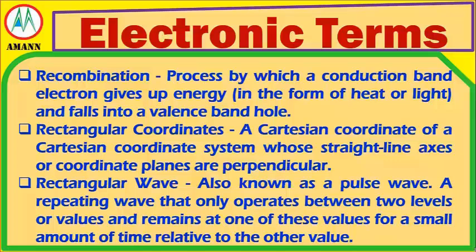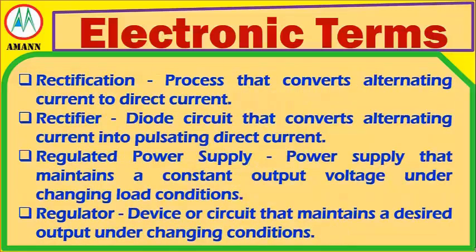Rectangular Wave: also known as a pulse wave; a repeating wave that only operates between two levels or values and remains at one of these values for a small amount of time relative to the other value. Rectification: a process that converts alternating current to direct current. Rectifier: a circuit that converts alternating current into pulsating direct current. Regulated Power Supply: a power supply that maintains a constant output voltage under changing load conditions.